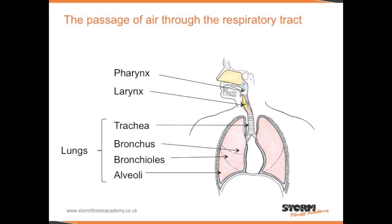From there it continues down into the trachea, which is what we call the windpipe. The windpipe then divides into two branches called the bronchi — if we're referring to just one of those branches, we call it the bronchus. That then divides further into lots of branches called the bronchioles. On the end of the bronchioles are air sacs called the alveoli. This is where gaseous exchange occurs, where we transfer carbon dioxide for oxygen — also known as diffusion.